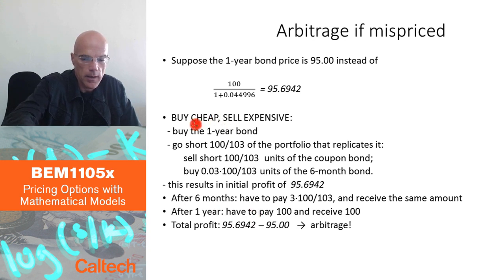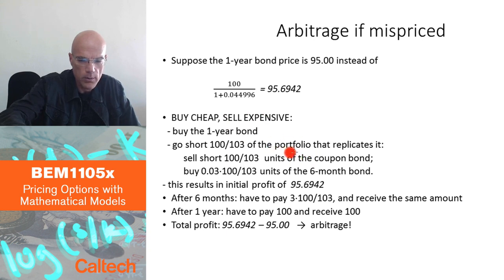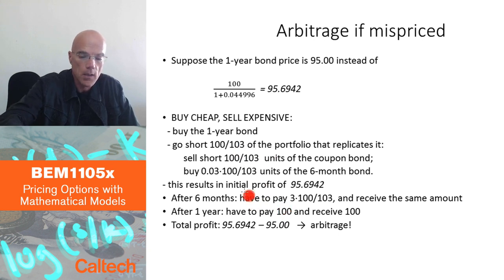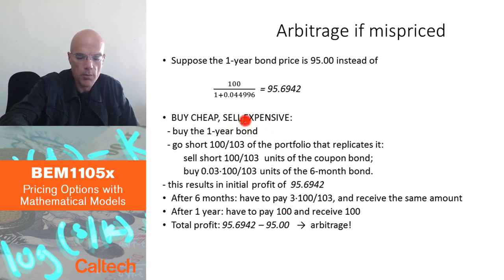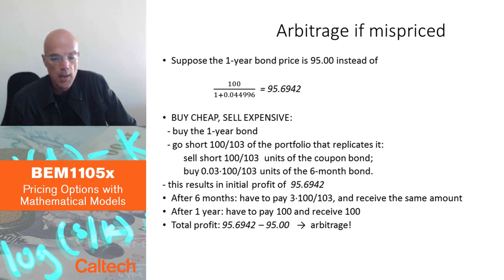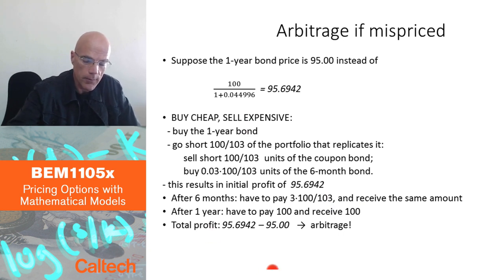After one year: I receive $100 from my long position in the one-year zero coupon bond. From the short coupon bond, I owe $103 × (100/103) = $100. So that also cancels. Everything in the future cancels out completely.